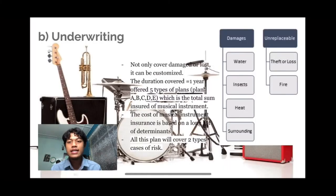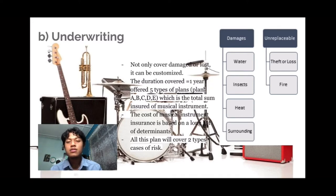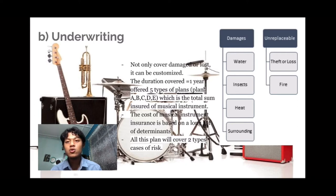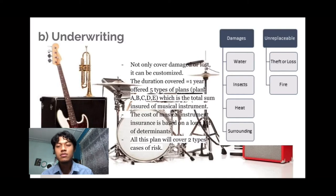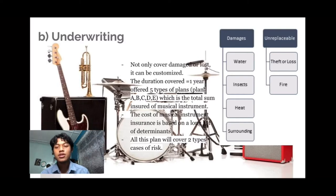We continue to underwriting. We not only cover loss or damage — it can be customized. We offer five types of plans that suit our customers based on the total sum insured of the instruments. No matter how many instruments you have, we total up all instruments based on market price. We cover two types of damage cases. The first is water, which can make wood become dissolved, broken, or weak. For insects, wood-eating insects could damage the instruments.